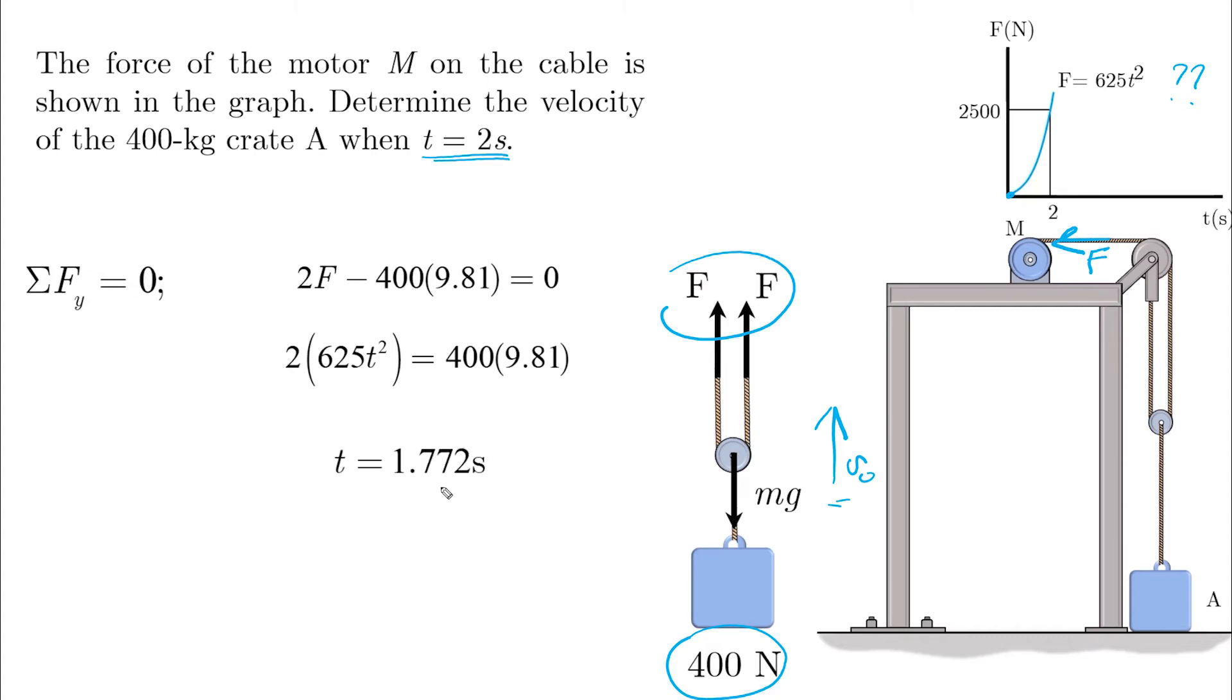If you substitute, for example, t equals 1 in this side, then this becomes 625 times 2, which is 1250. The other side becomes around 3900. So the left side here is less than the right side, which means that the force is less than the weight and the system is not moving yet. It stays this way until t becomes equal to 1.772 seconds.